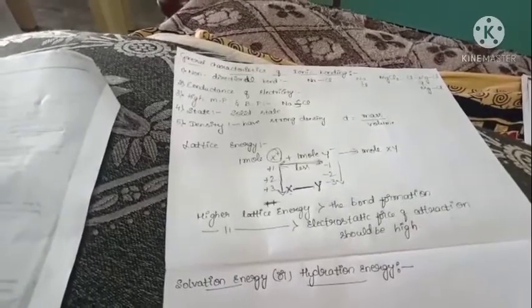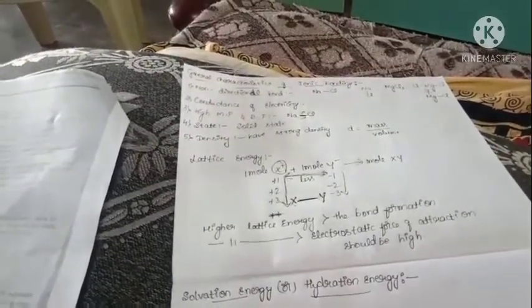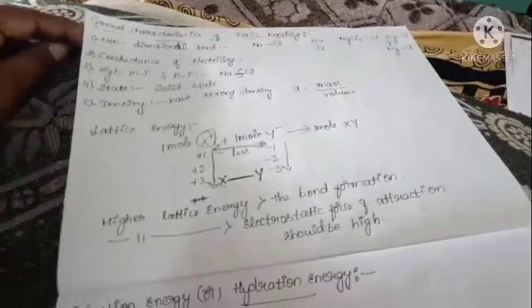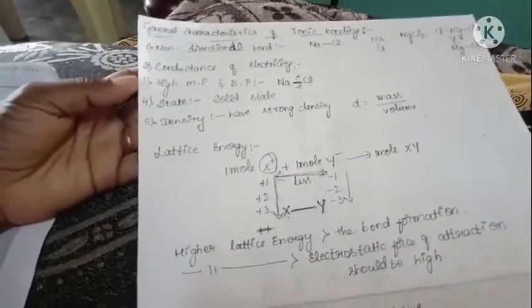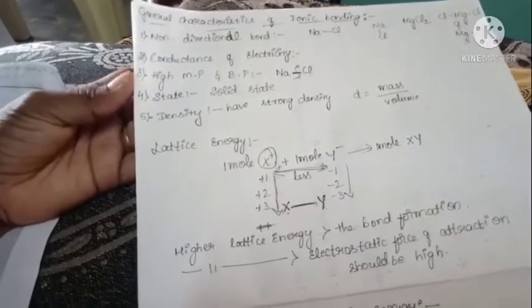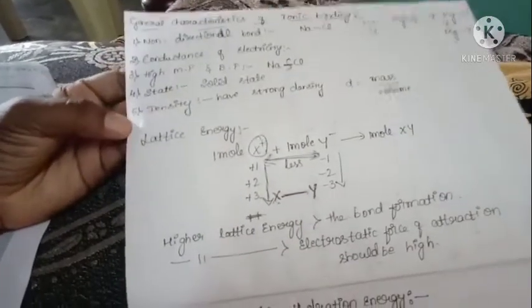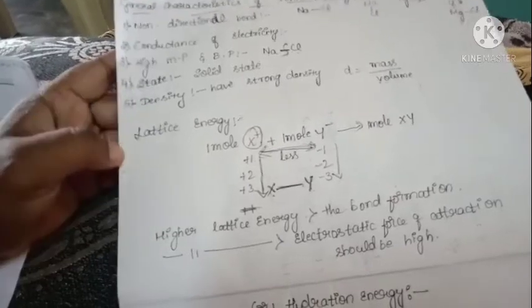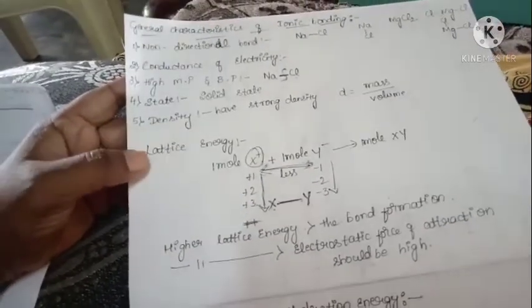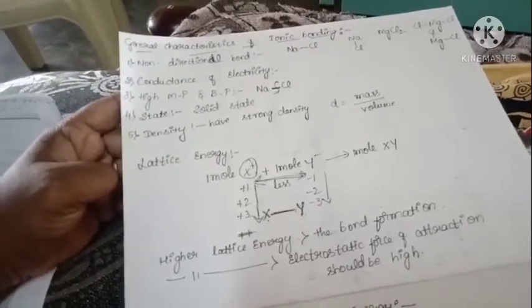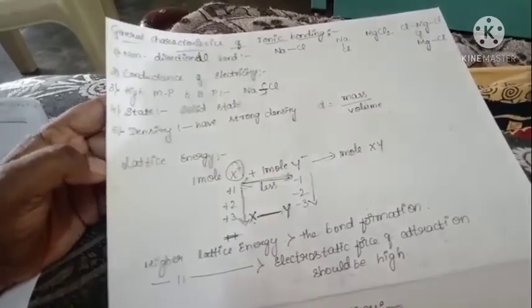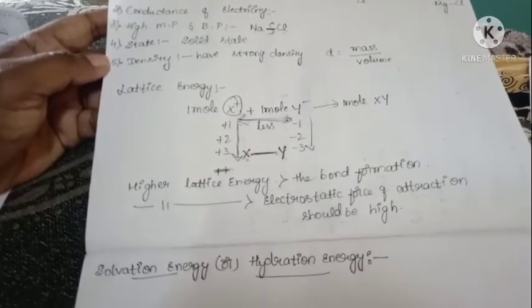In today's class we learned about what is chemical bonding. There are three types of bonds: ionic bond, covalent bond, and coordinate bond. In ionic bonding we covered the definition, the example of NaCl formation, general characteristics — non-directional bond, conductance of electricity, high melting point and boiling point, state, and density — and also lattice energy: one mole of cation and anion forms one mole of ionic compound. Next class I will continue with solvation energy or hydration energy. Thank you.